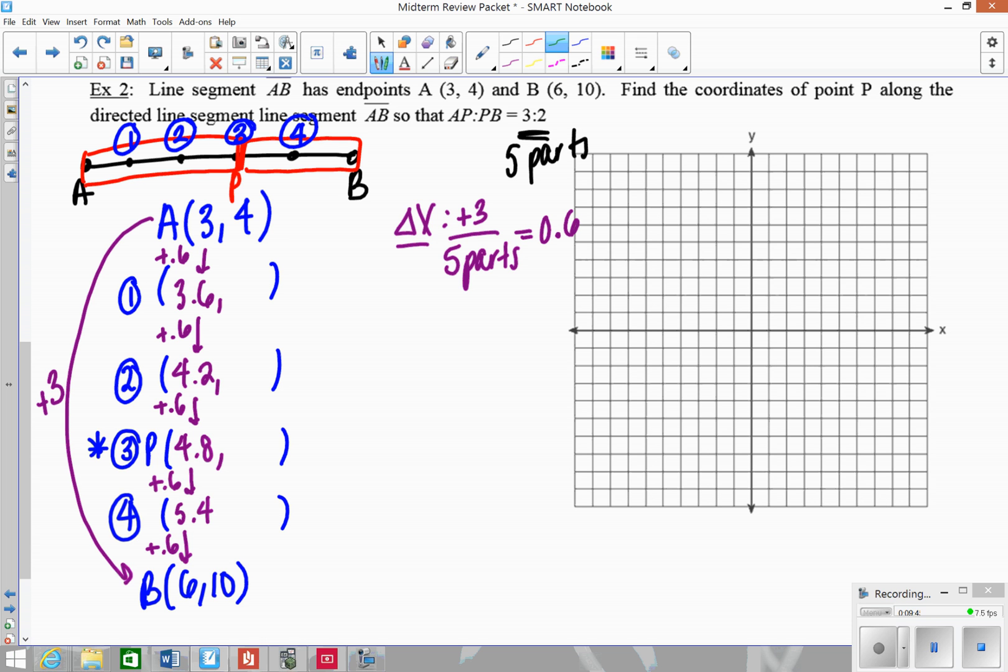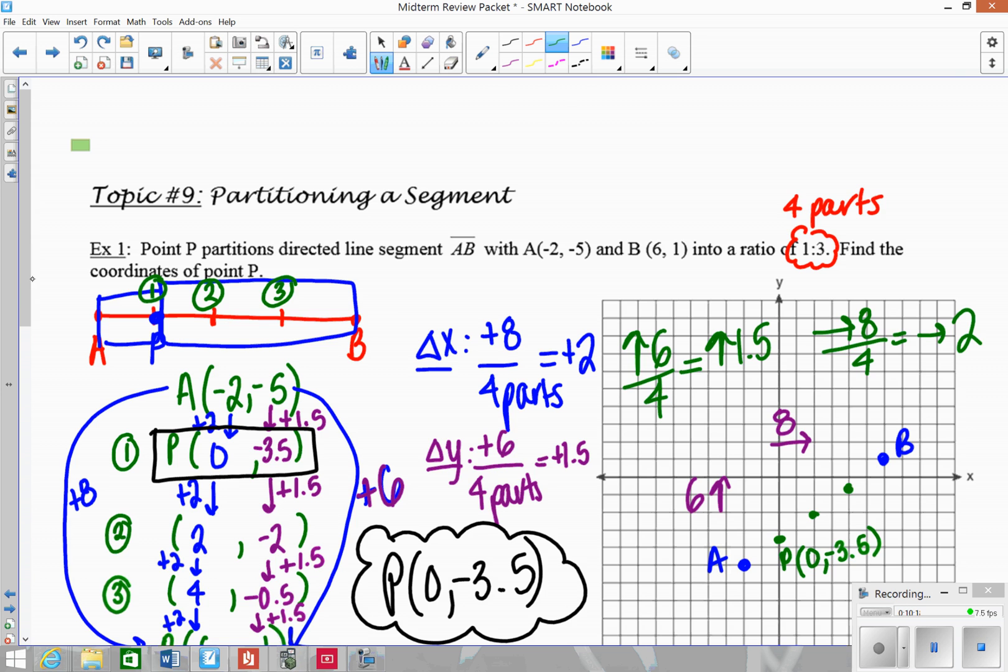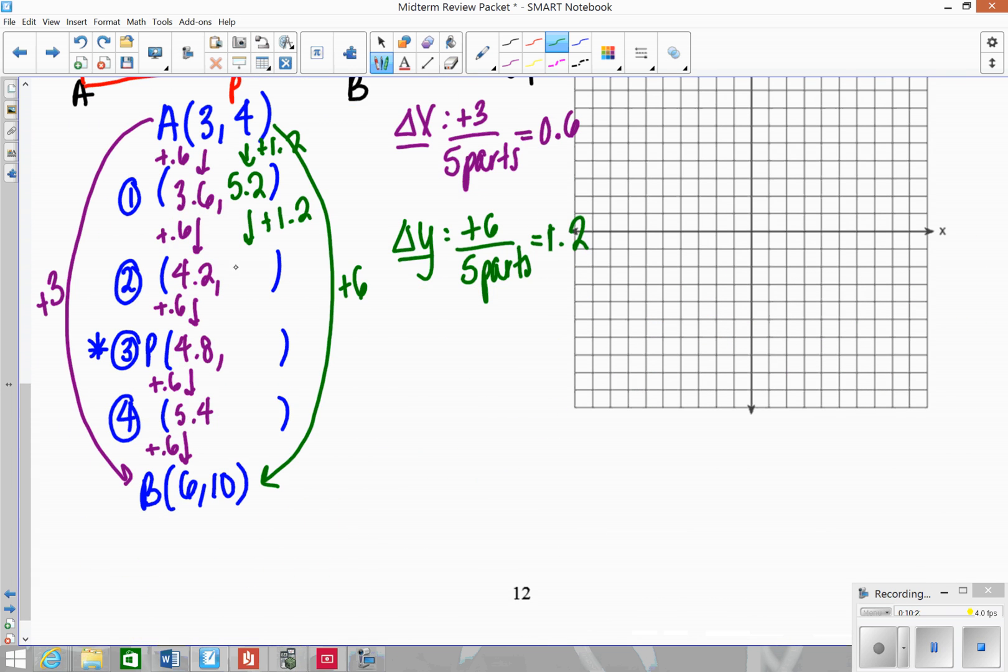So then we do the same process but to the y's. So how did I go from 4 to 10? Well, I added 6. So the change in y's is 6. But I have to divide that by the 5 parts that I need. So this is 1.2 when you divide it. So you're going to add 1.2 to each piece. So I get 5.2. Add 1.2 again, you get 6.4. Add 1.2 again, we get 7.6. Add 1.2 again, you get 8.8. Add it again, you should get 10.